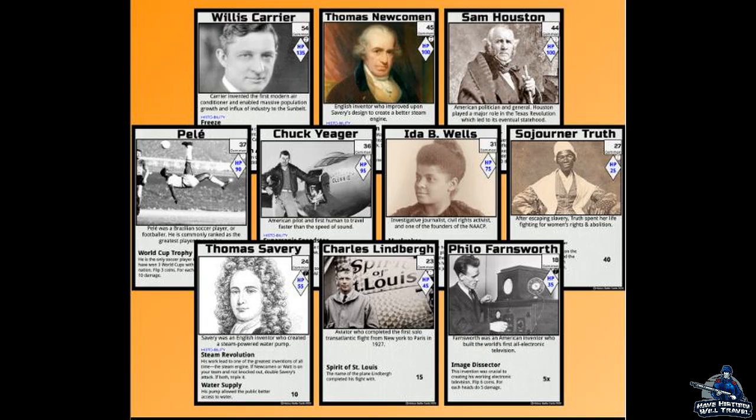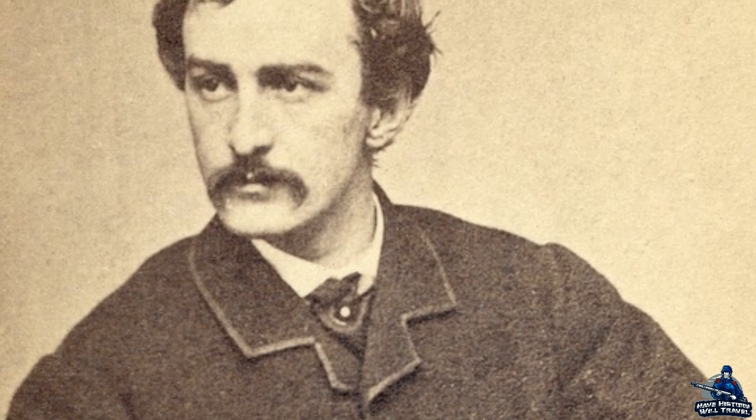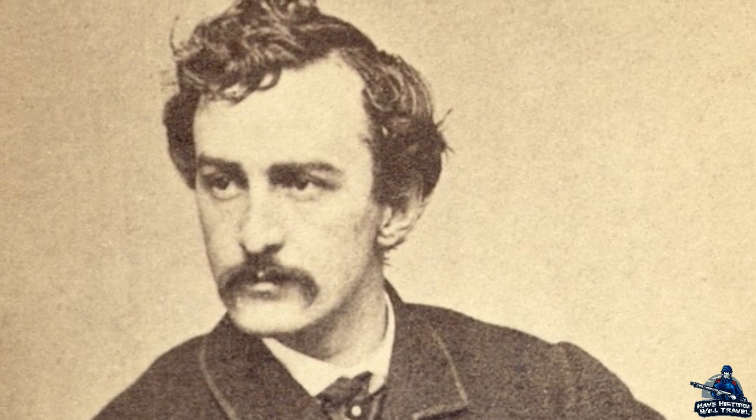Even the small things on these cards are educational and can be used to dive deeper into a topic. On the Andrew Jackson card, it lists him as the first 'common man' president — and common man is in quotes. That is perfect because even though he was portrayed that way, he was a wealthy elite planter, even though he did come from more humble beginnings. Another detail I loved is on the John Wilkes Booth card: if he is played against Abraham Lincoln, the president is automatically knocked out of the game, so students associate Booth with Lincoln.